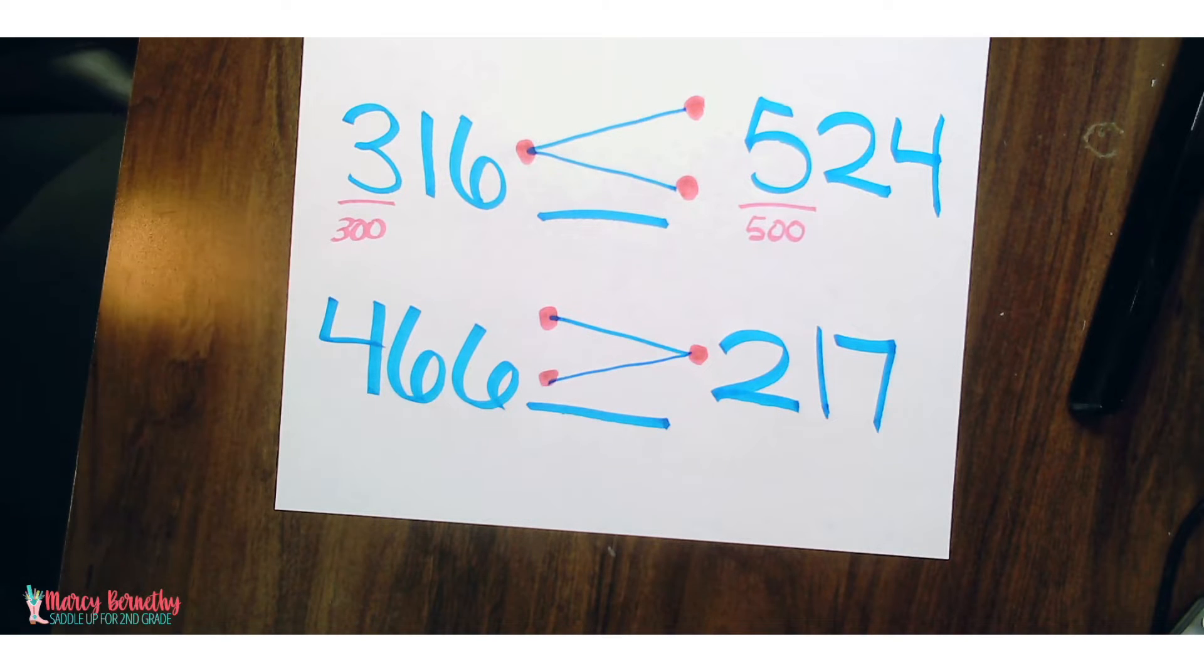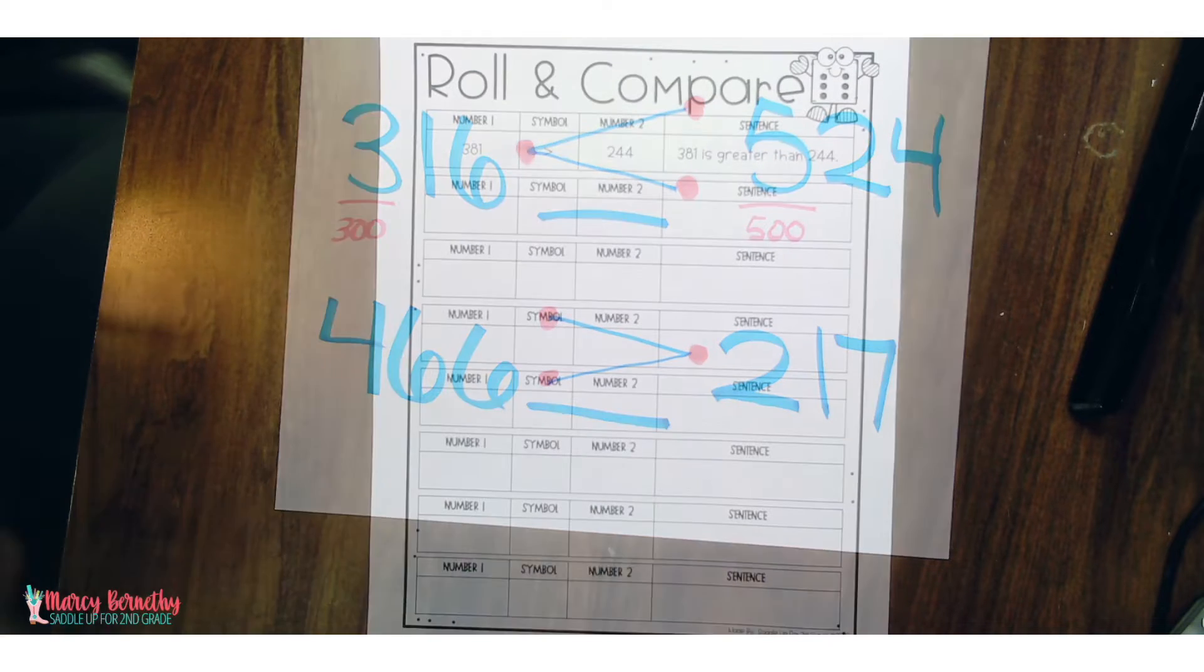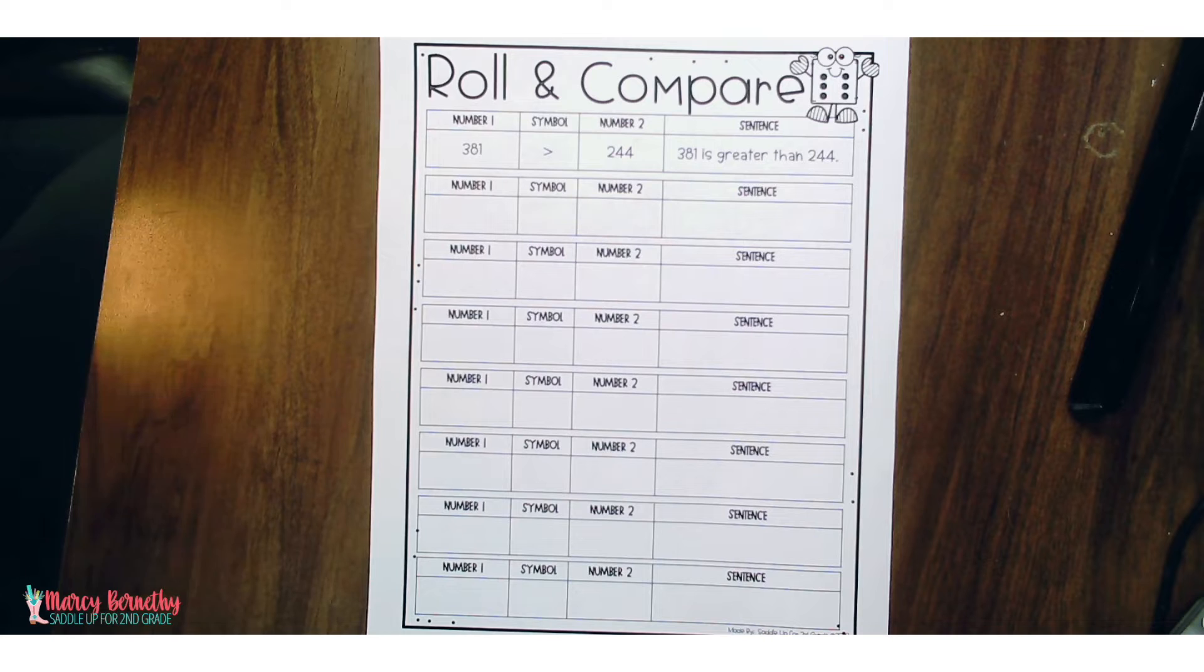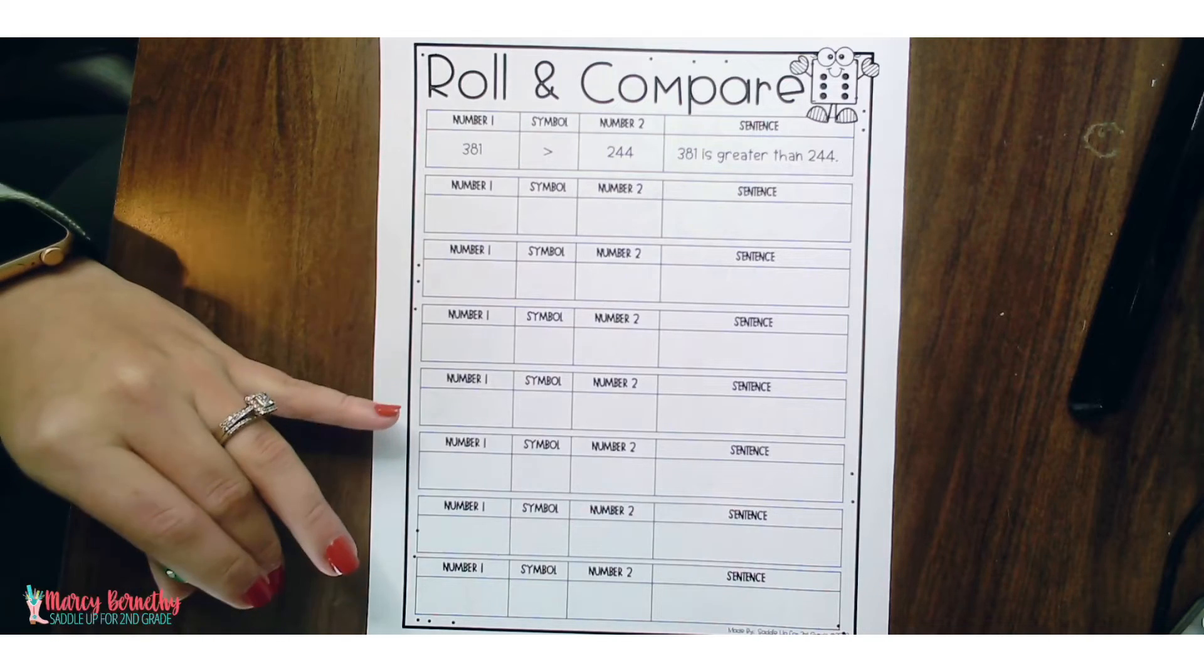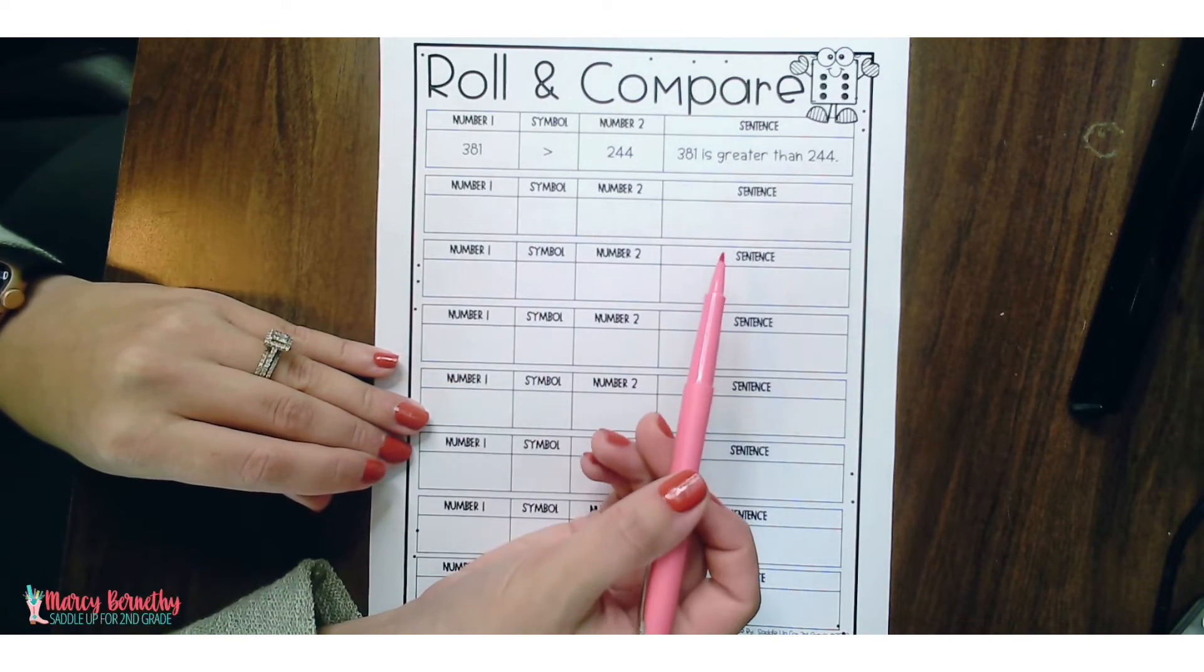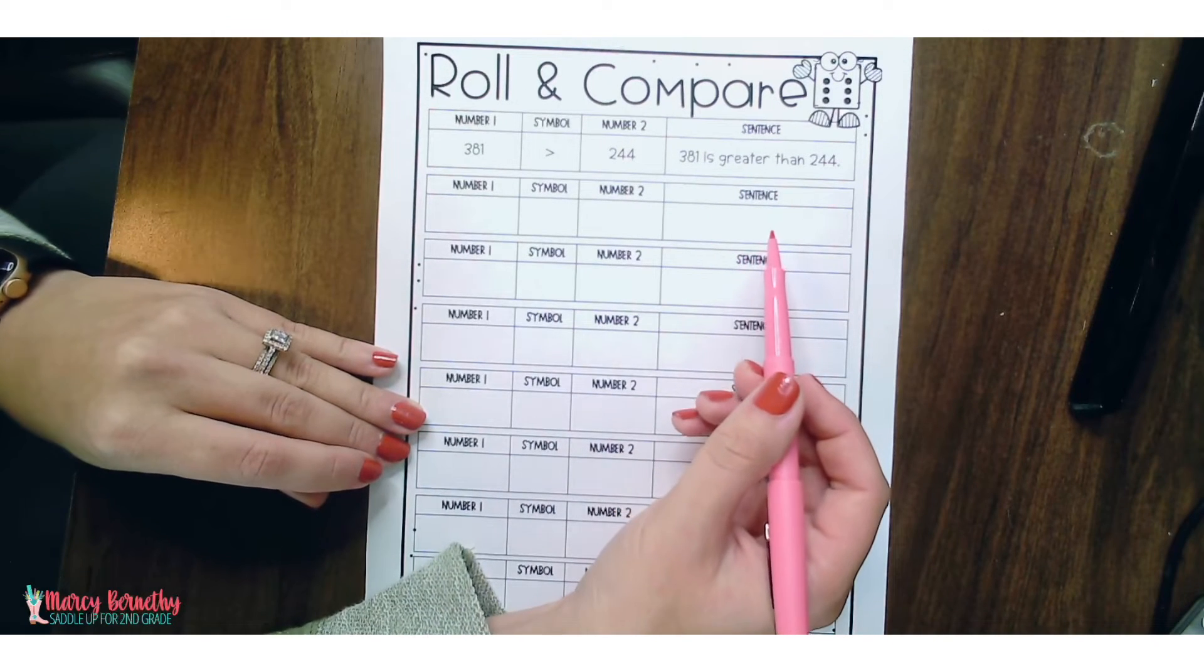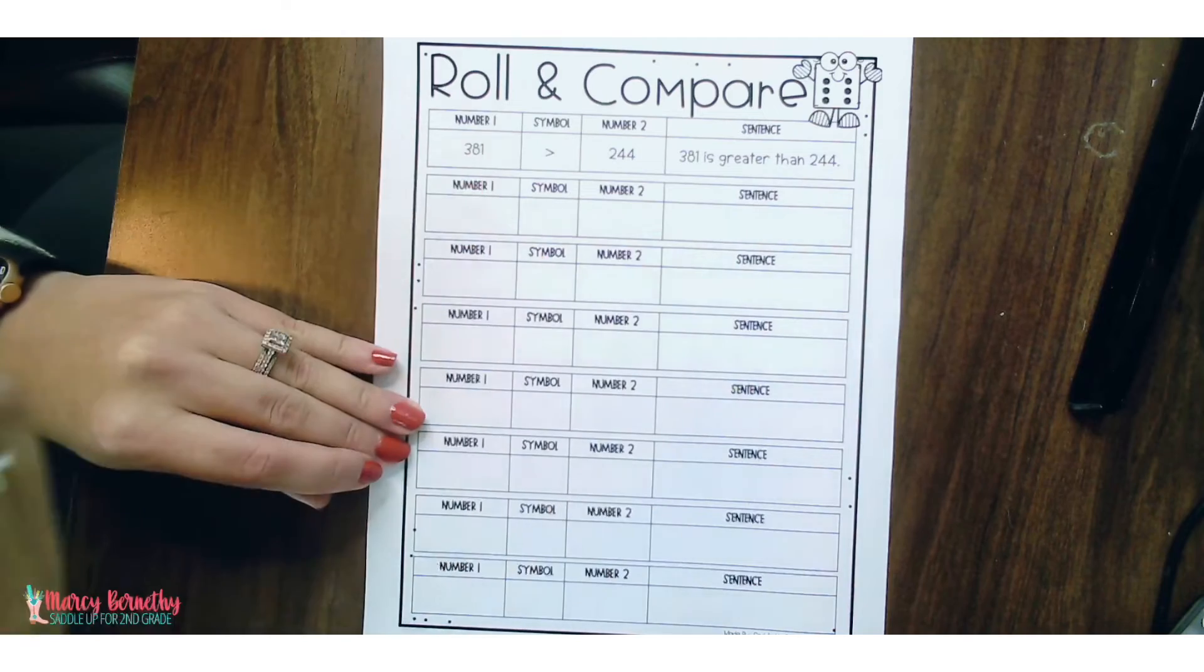Let me show you how students can practice this independently. Maybe on work from a workbook or maybe when they're working independently in math stations. With this activity, kids can practice independently and they are going to roll dice to create a three-digit number or two three-digit numbers or four digits, two digits, whatever grade level you might be working with. So this type of activity is very easily differentiated. They are going to create their own two numbers to compare using dice. They're going to compare using symbols, but then they also have to write a sentence using the correct vocabulary term to compare their numbers.